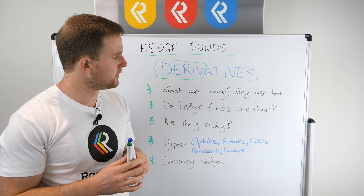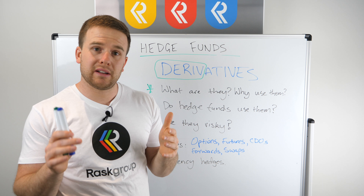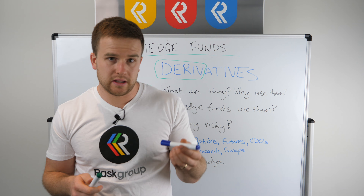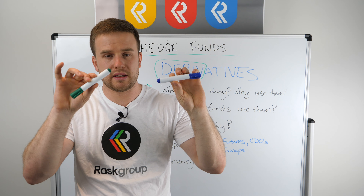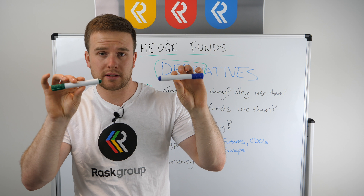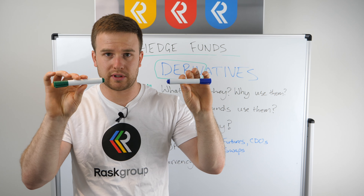So what are derivatives? Derivatives derive their value from something else. They're typically a legal contract between two investors, an investor and a bank, or an investor and many other investors, and they get their value from another asset. So let's say this here represents a share price, and this is a derivative contract — this contract has its own price and you can buy and sell this derivative on a stock exchange, for example.